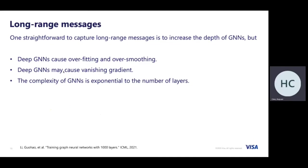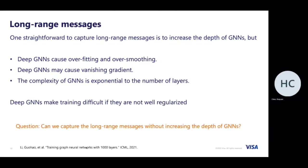The complexity of GNN is proportional to the number of layers, which is not scalable for very large graphs. Even though research can train GNN over 1,000 layers, in practical real-world deployment only three or four layers are used. So the key question is: can we capture long-range messages without increasing the depth of GNN?